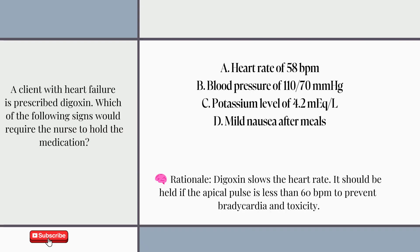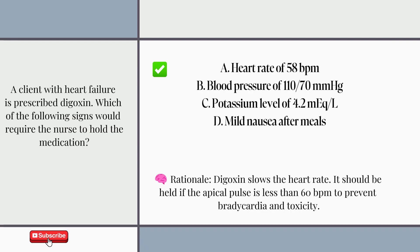Answer: A. Heart rate of 58 BPM. Digoxin slows the heart rate. It should be held if the apical pulse is less than 60 BPM to prevent bradycardia and toxicity.